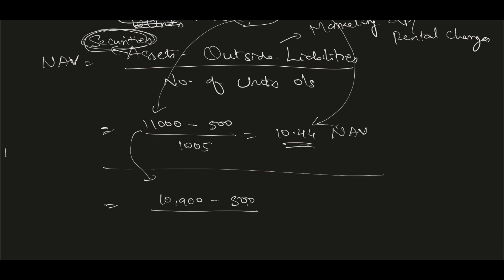Divided by the number of units. Imagine some people just redeemed their units, so the number has come down to, let's say, 1,003. Now when you calculate, 10,900 minus 500 divided by 1,003, this comes to 10.36. So this is the new NAV.